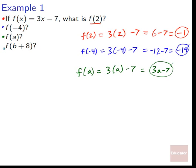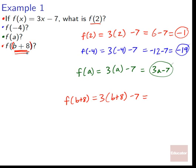What if we want f of b plus 8? Same thing: f of (b + 8) equals 3 times (b + 8) minus 7. Notice how important it was that we put it in parentheses — if we just plugged in as 3b + 8, that would be totally different from 3 times the quantity (b + 8). We distribute: 3 times (b + 8) minus 7 gives 3b plus 24 minus 7, which equals 3b plus 17.